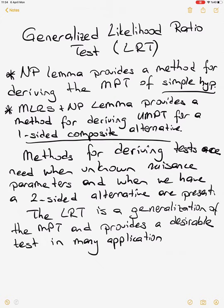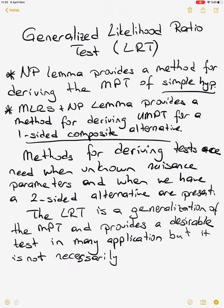Then we have the uniformly most powerful test, and we know that the testing procedure gives us the most powerful test for a fixed alpha. But sometimes we may not have the most powerful test — the generalized likelihood ratio test provides a desirable test but does not necessarily provide a uniformly most powerful test. It sometimes gives different results than UMP, but it has good properties when we don't have any UMP test.